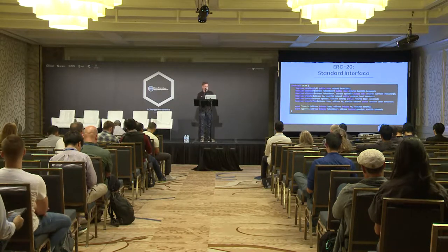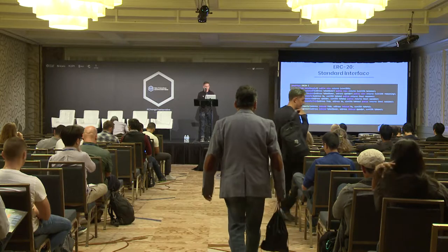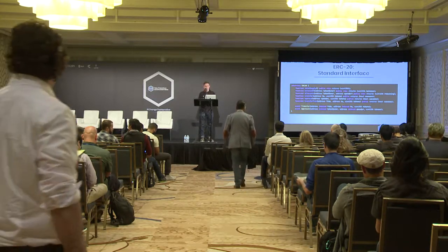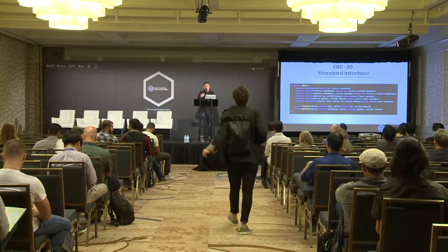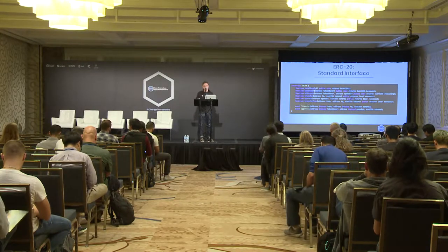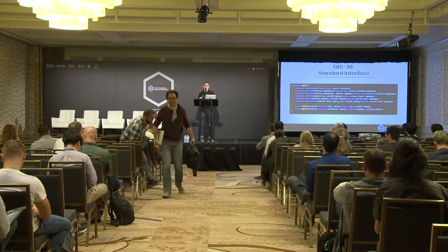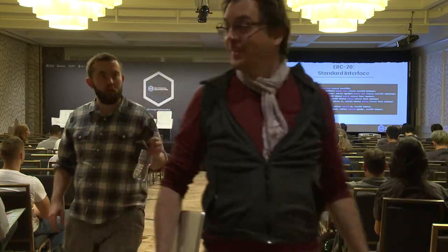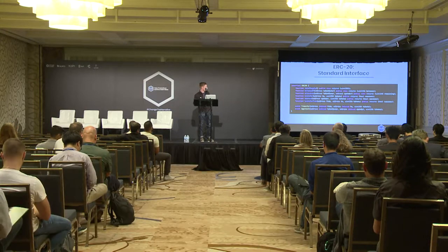The next three functions are transfer, approve, and transfer from. Transfer changes the balance of two accounts and can only be called by the sending account. Approve allows an account to set a number of tokens transferable by another account. Transfer from, similar to transfer, transfers tokens from one account to another but is callable by that approved account. These exist so that a smart contract can initiate transfer from and emit an event regarding that transfer. The two events, transfer and approval, are emitted when tokens are successfully transferred or approved.